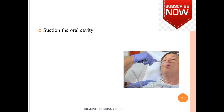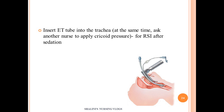Insert the ET tube once the laryngoscope is in place and the trachea is visualized. In rapid sequence intubation, cricoid pressure is applied: press on the cricoid cartilage (below the thyroid cartilage) to obstruct the esophagus, preventing regurgitation of gastric contents and aspiration, providing a clear path for the ET tube.